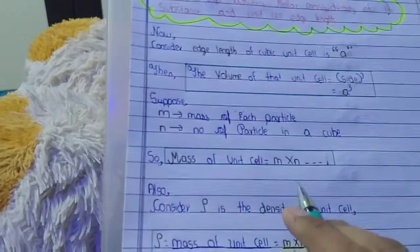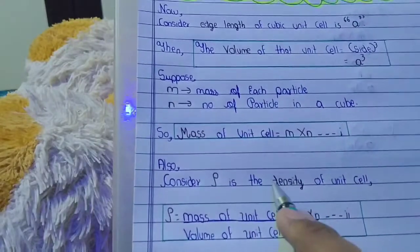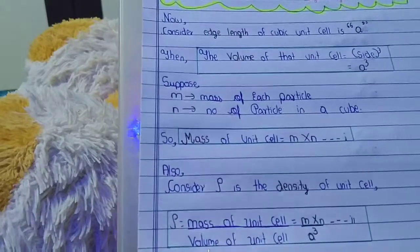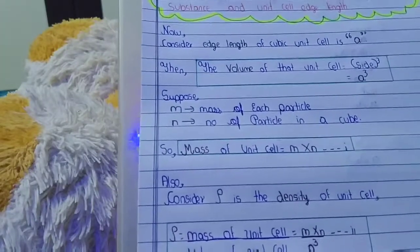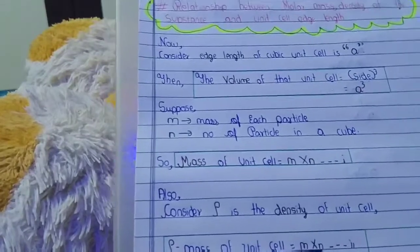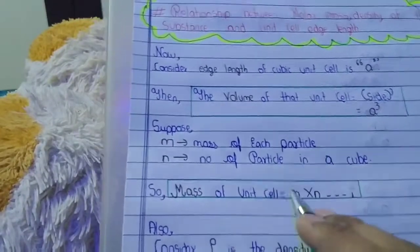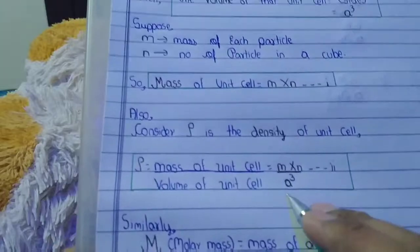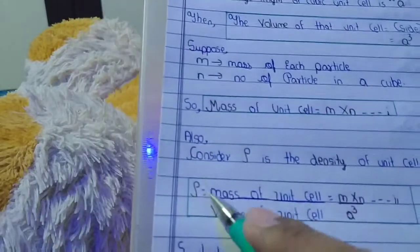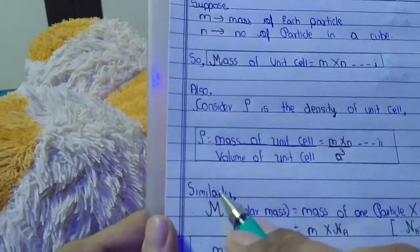Density (rho) is mass upon volume, where both mass and volume refer to the unit cell. Substituting, mass is m times N and volume is A cubed, so density equals m·N divided by A³.